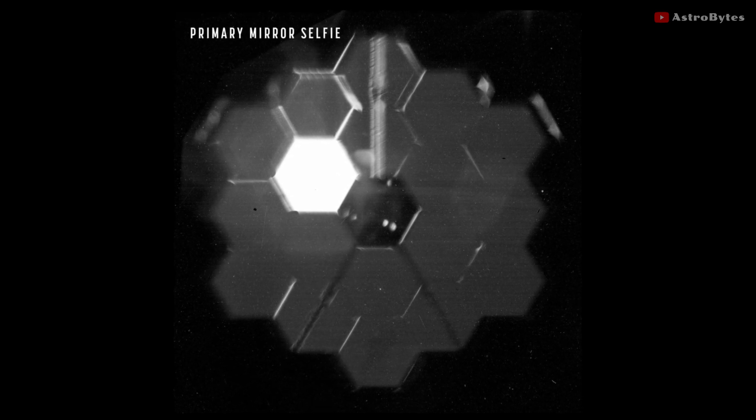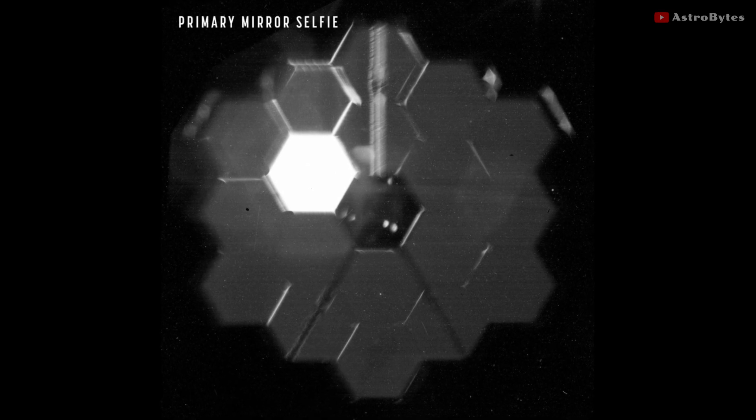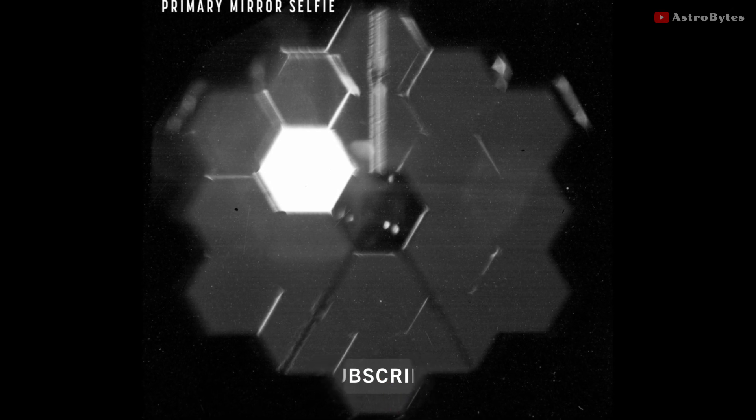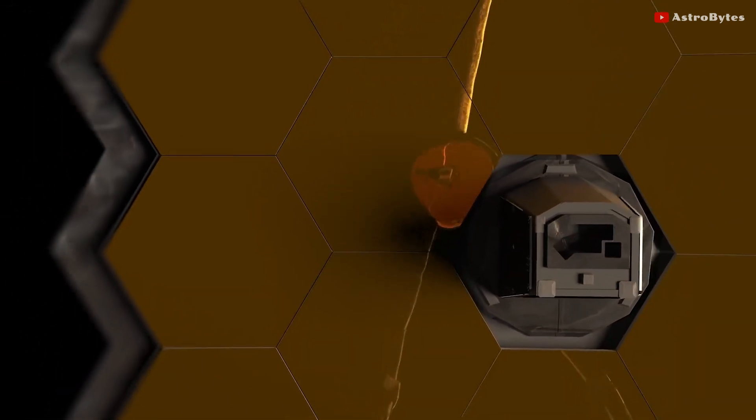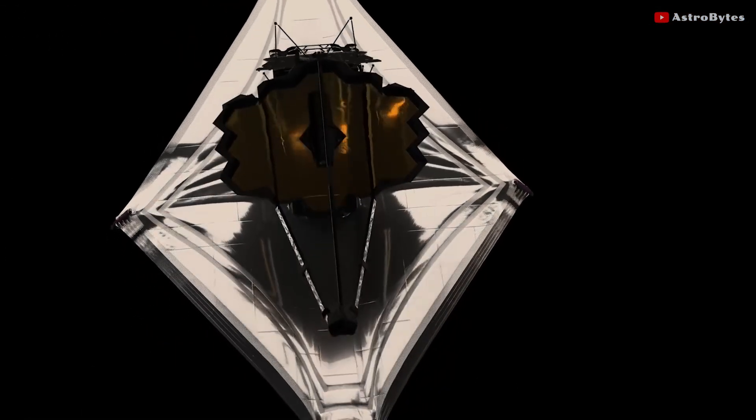In this image, one of the segments appears much brighter than the others. This is because it is pointed directly at a bright star while the others aren't yet in the same alignment. This selfie taken of its primary mirror was not captured by an externally mounted engineering camera, but was captured with a special lens within its near-infrared camera.